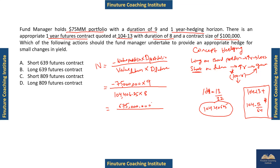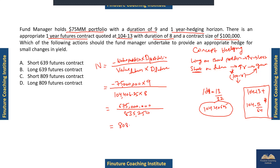Dividing those numbers out gives approximately 0.811 thousand, which is approximately 809 contracts — short 809 contracts. The correct answer is C. Hope you liked the video. If yes, please do share with your friends and peers who are preparing for the finance exam. Thank you very much for watching, stay connected.